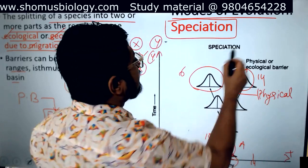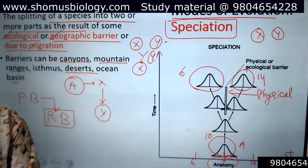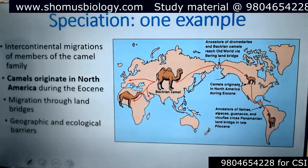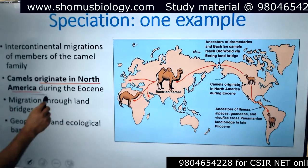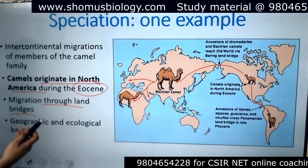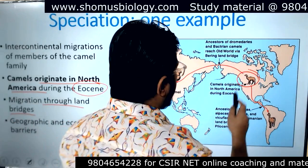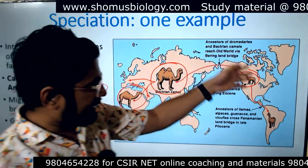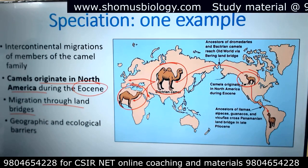When two species are reproductively isolated, it means they have become different species. If they are not reproductively isolated, they are the same species. One example of speciation is the camels — they originate in North America during the Eocene. Through migration via land bridges, they started their journey in North America, migrated to Asia, from there to Africa, and also from North America to South America, becoming different types of camels.